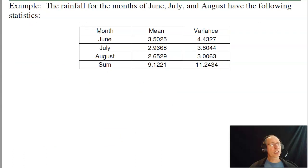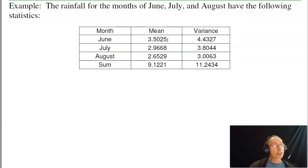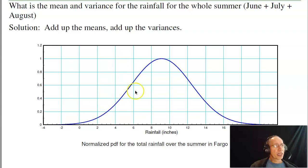With that I can do things like: if I look at the rainfall for the months of June, July, and August from Hector Airport, I want to find out what's the PDF for the total rainfall in the summer. Just add the means together, add the variances together — that's the normal distribution for the total rainfall. This is the PDF for the total rainfall over the summer in Fargo, North Dakota.